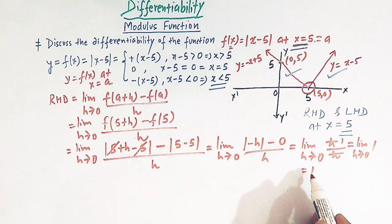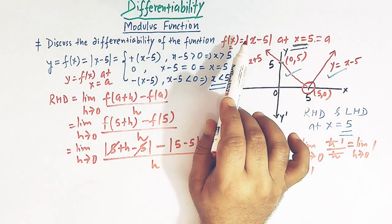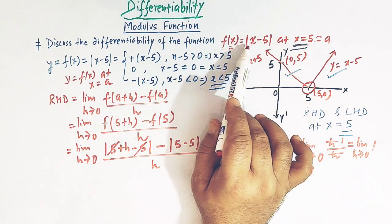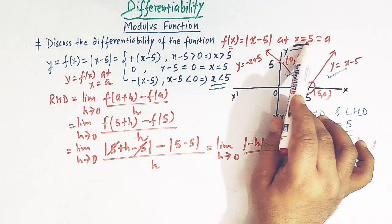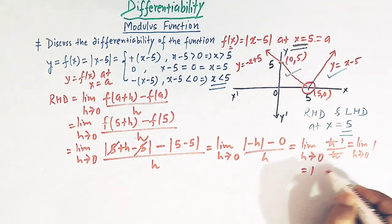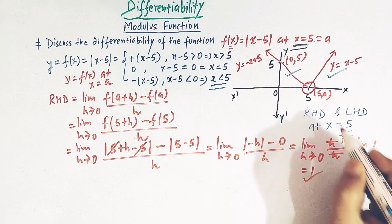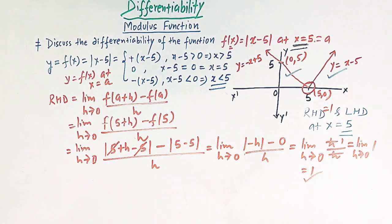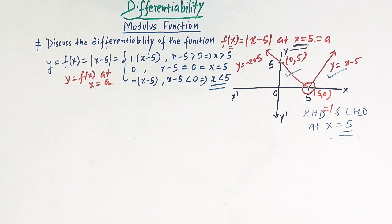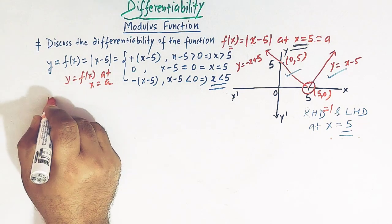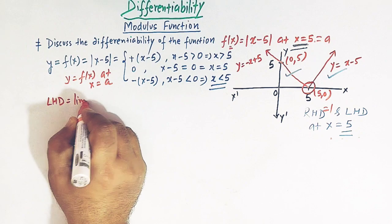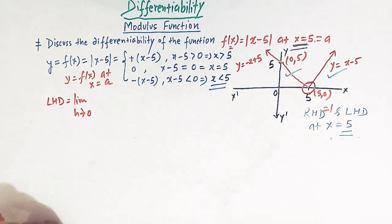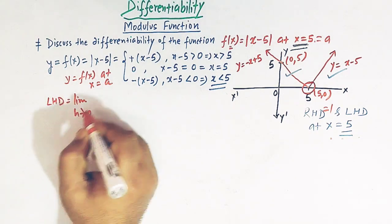So the right hand derivative of f(x) = |x - 5| at x = 5 is 1. Now let us find out the left hand derivative.